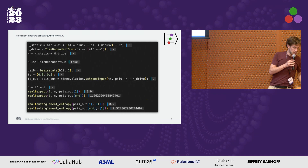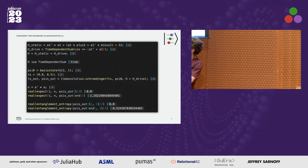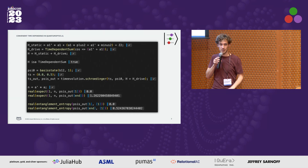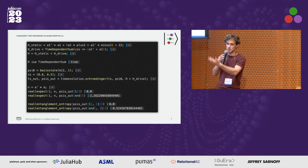Just to prove that it kind of works: we have an example showing that the occupation number of the resonator mode starts at zero and goes up to 1.26 by the end of the evolution. And the entanglement entropy — everyone likes entanglement, right? — starts at zero and goes up to some non-zero value. We've created entanglement. Obviously only in simulation.